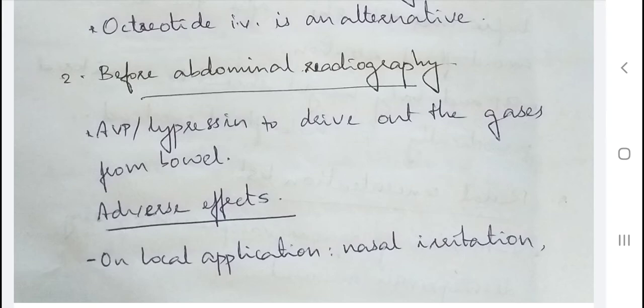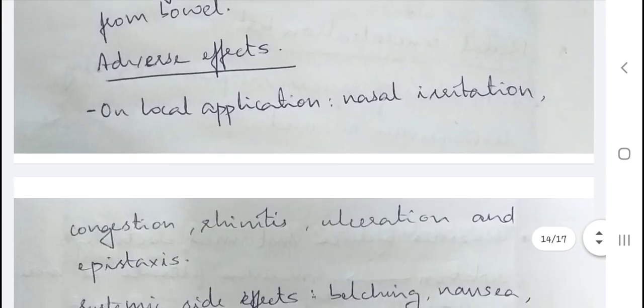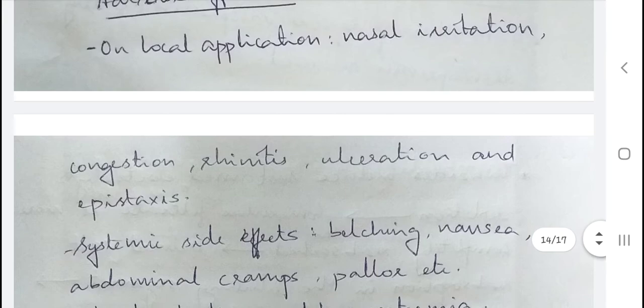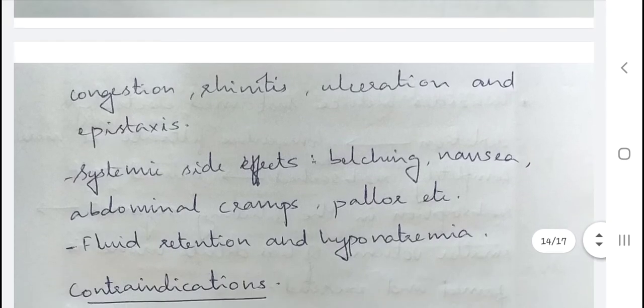Adverse effects of vasopressin analogues: on local application, nasal irritation, congestion, rhinitis, ulceration, and epistaxis can occur. Systemic side effects include belching, nausea, abdominal cramps, and pallor. These drugs can also cause fluid retention and hyponatremia, which must be monitored periodically.